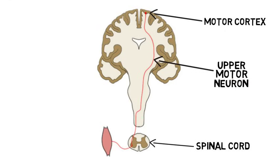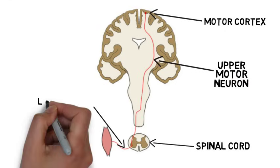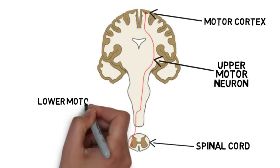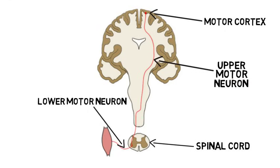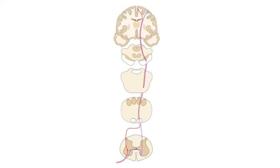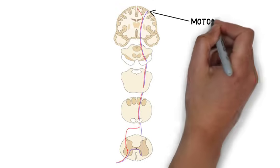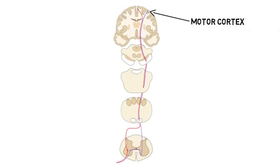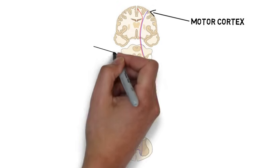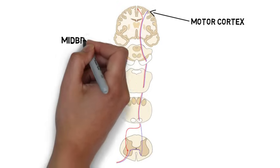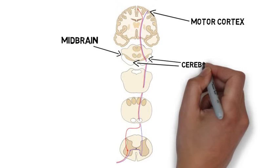Upper motor neurons form connections with neurons called lower motor neurons, which carry movement-related impulses to muscle itself, causing it to contract. The upper motor neurons of the corticospinal tract leave the motor cortex and descend to the brainstem, entering the midbrain in large fiber bundles called the cerebral peduncles.